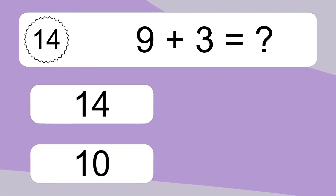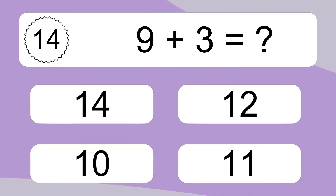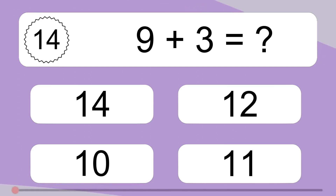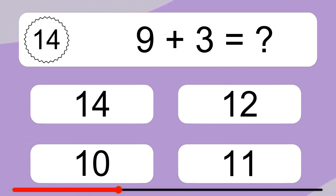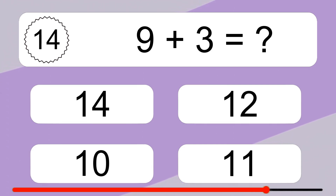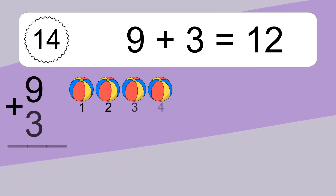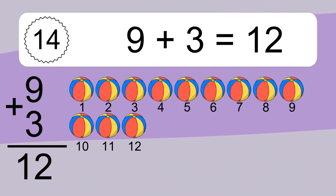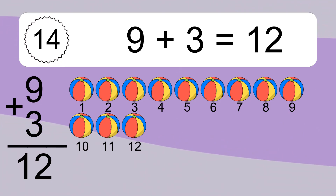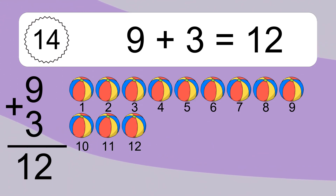9 plus 3 equals what? 9 plus 3 equals 12. Let's count it. 1, 2, 3, 4, 5, 6, 7, 8, 9, 10, 11, 12.